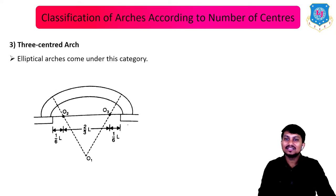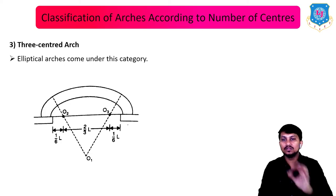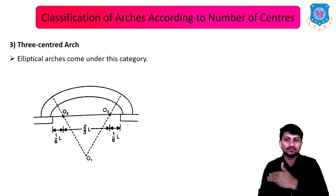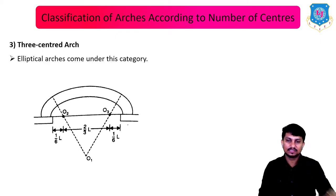Next is the three-centered arch. Elliptical arch comes under this category, in which three centers — O1, O2, and O3 — are placed, usually at one-sixth of L, two-thirds of L, and one-sixth of L.